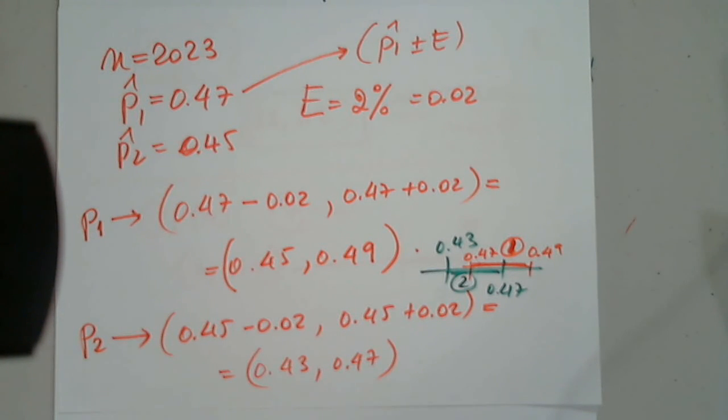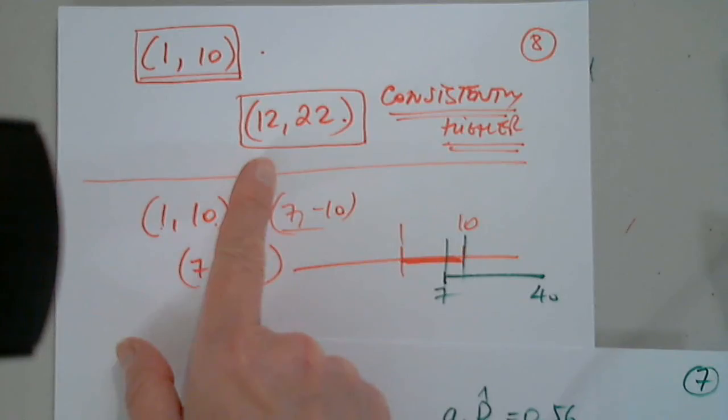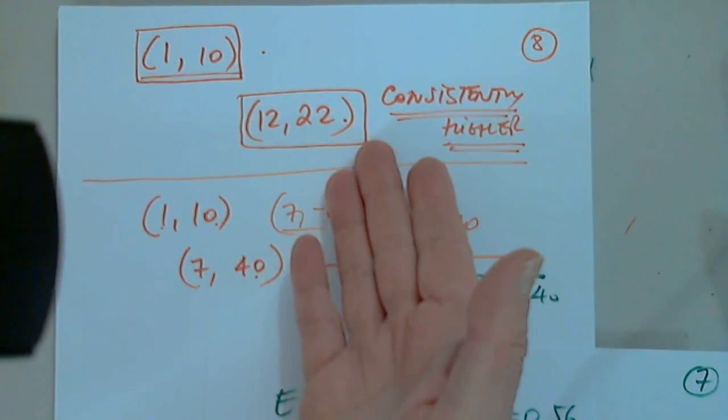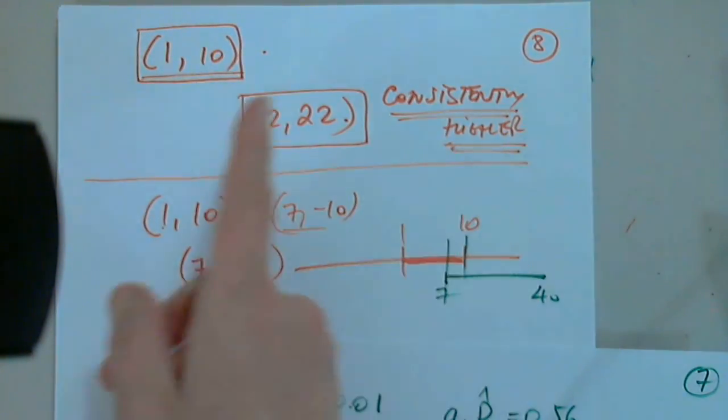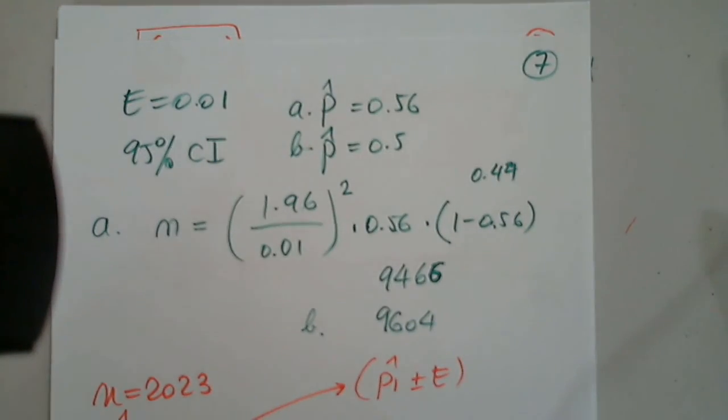There's overlap in there? There is overlap. We cannot draw a conclusion. We cannot call the winner. I can call the winner here. Look, 12 to 22. 100% consistently higher than here. But here, I cannot call a winner. Because there is an overlap.